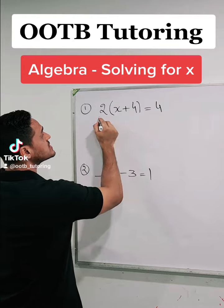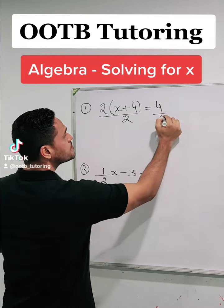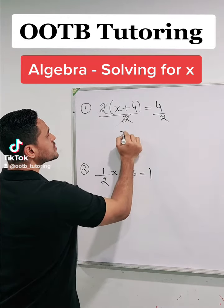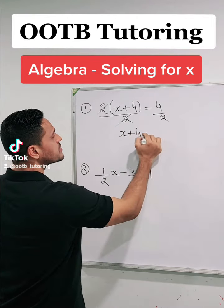To isolate x, we'll first divide both sides by 2. 2 divided by 2 would cancel, and 4 divided by 2 is 2, so we've got x + 4 = 2.